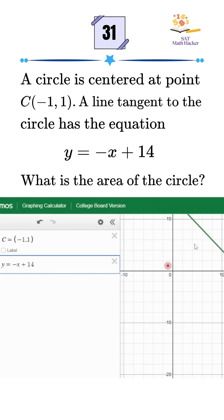The distance between the center and this point is the radius. Draw a line from the center that's perpendicular to the tangent. Since the slope of the tangent is negative 1, the perpendicular slope will be positive 1.